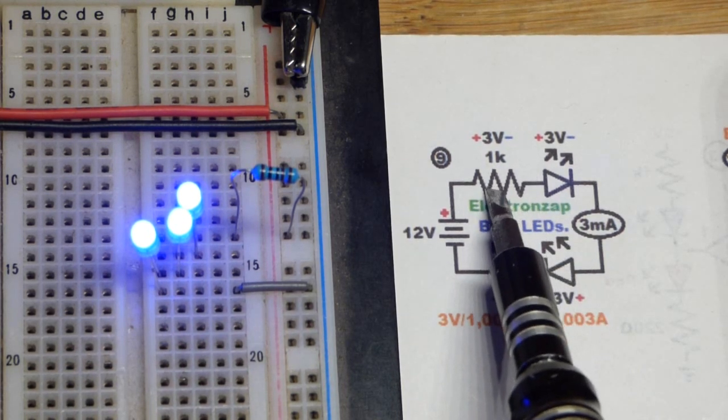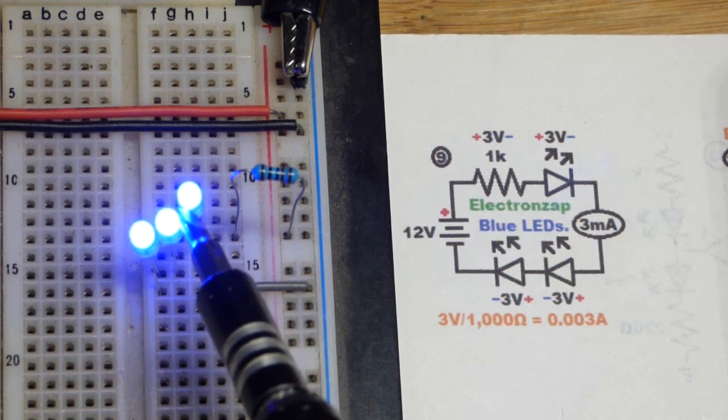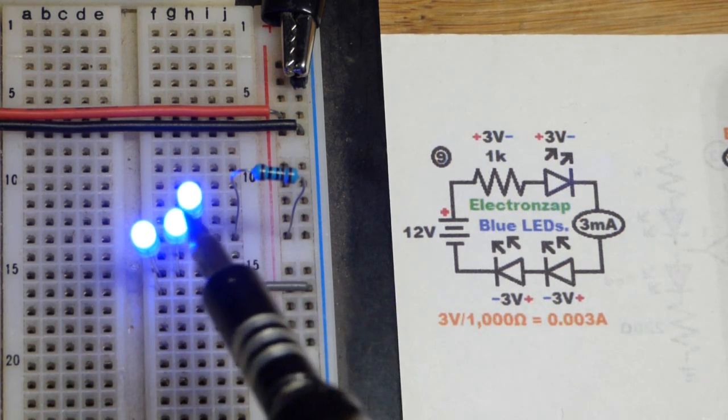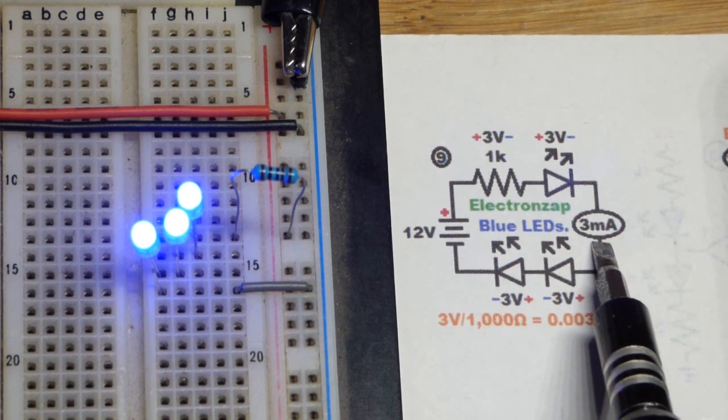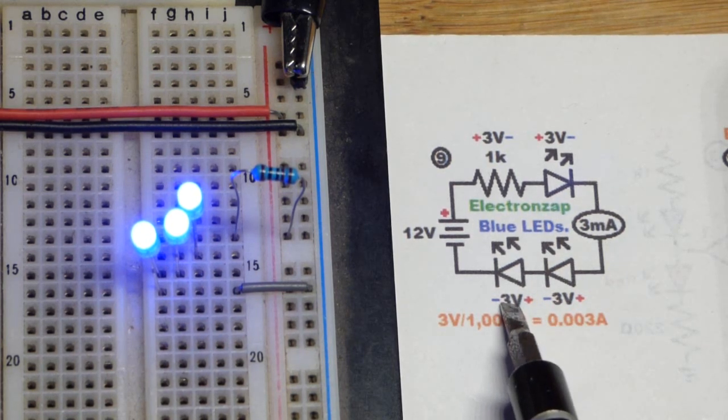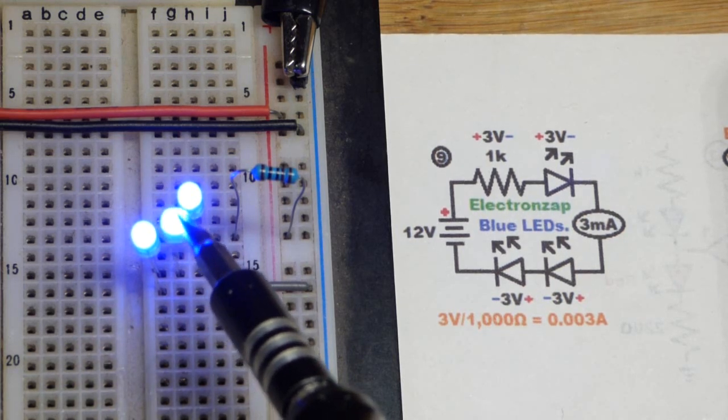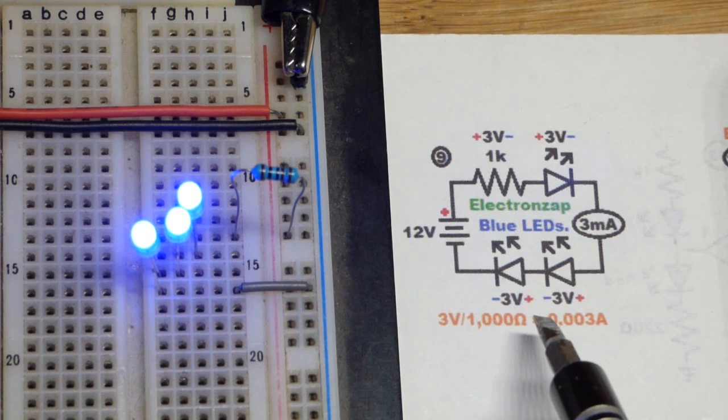And we got a higher value resistor there because we don't need as much current to get the same brightness. These are probably about the same brightness as the red LEDs were that had 13 milliamps of current approximately going through them. And so each one of these LEDs drops about three volts, especially when it gets close to like 15 milliamps of current or something.